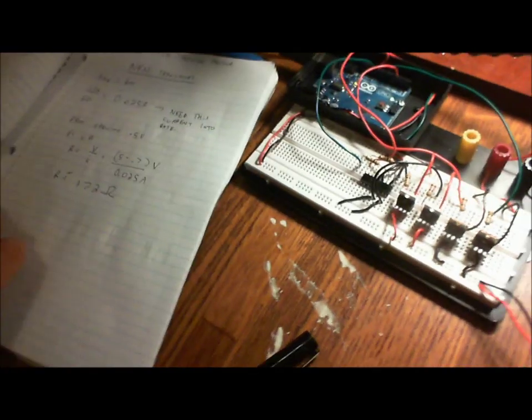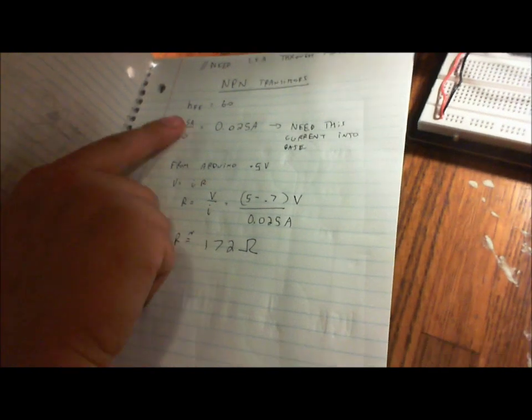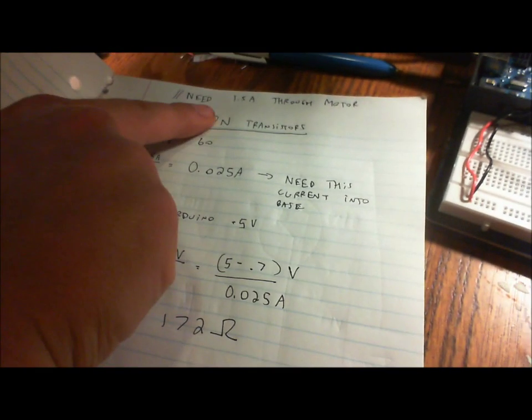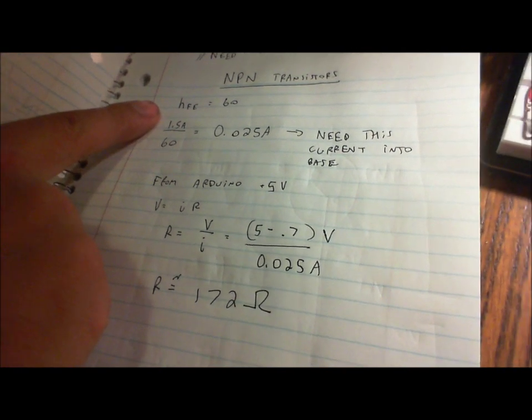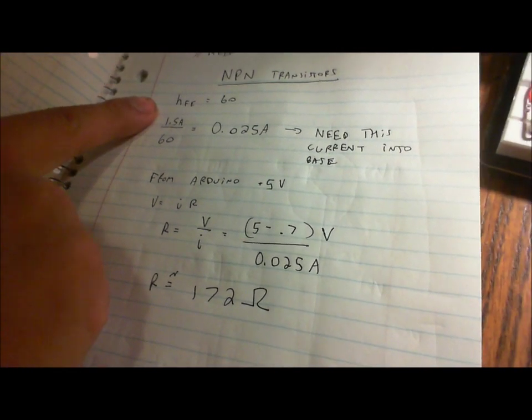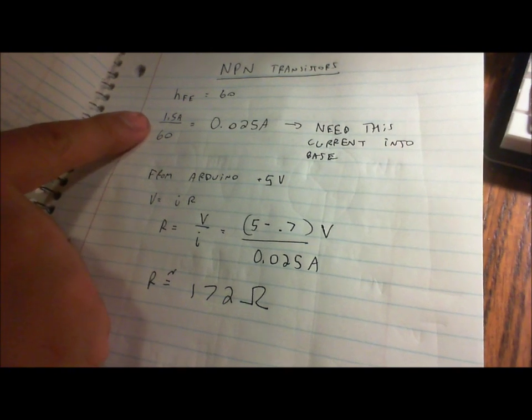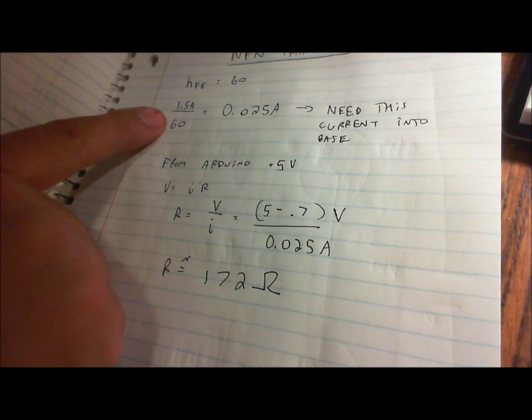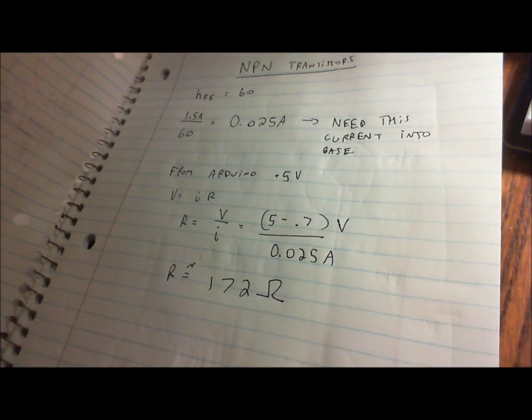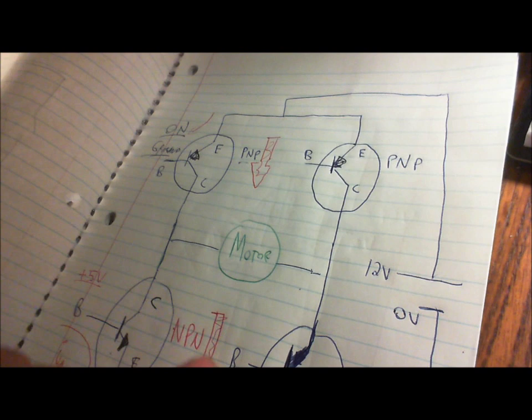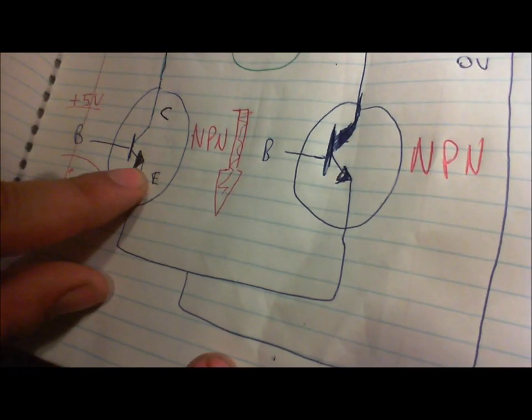Okay, so now just to run through the NPNs real quick, because they're a little bit different. Again, we need an amp and a half through the motor. The HFE value is 20 to 70, but I think most of them are about 60. I divide the 1.5 by the 60. We need that current. Now this current, again, is flowing, for the NPNs, it's flowing from the collector to the emitter. And it's coming into the base.